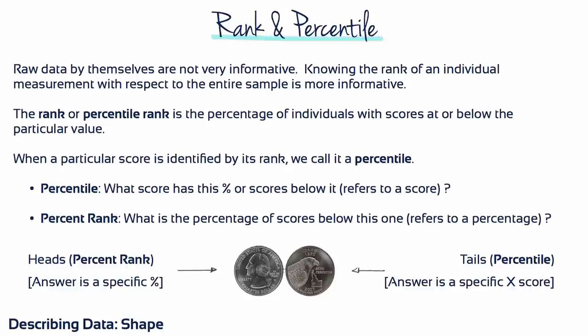Although the primary purpose of a frequency distribution is to provide a description of an entire set of scores, it can also be used to describe the position of an individual within the set. By themselves, raw scores don't provide much information about their position in the overall data distribution. Because of this, they're usually transformed into a more meaningful form. One transformation that we will consider changes raw scores into percentiles.